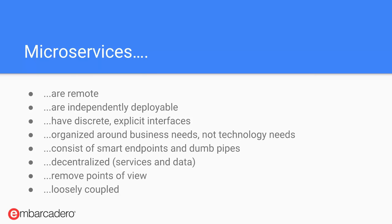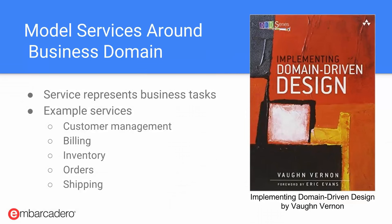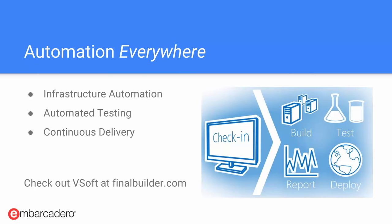You can have a team working on one microservice. Say you have eight microservices — those eight combine to create a single client application, and you can have eight different teams or people working on each individual one. Going through some principles: they model services around a business domain. Customer management, billing, inventory, orders, and shipping would all have their own microservices. There's automation everywhere — the infrastructure can be automated so REST clients are automatically updated, tested, and deployed in a continuous delivery fashion.